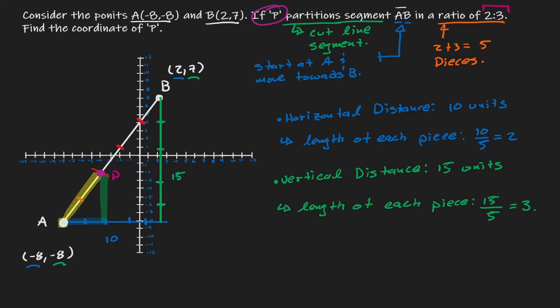Another way of thinking about it is: we start at point A and move 4 units to the right and 6 units up to find the location of P.